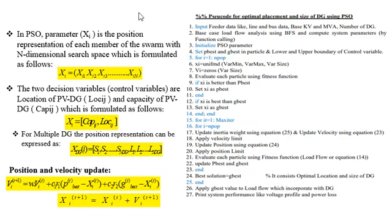In PSO, Xi represents the position of each member of the swarm in an n-dimensional search space. In this thesis, the decision variables are location and size, so the position representation encodes location and size for multiple PVDG units. The velocity and position are updated using the standard PSO update equations. Here is the PSO code for optimal placement and sizing used in this research.